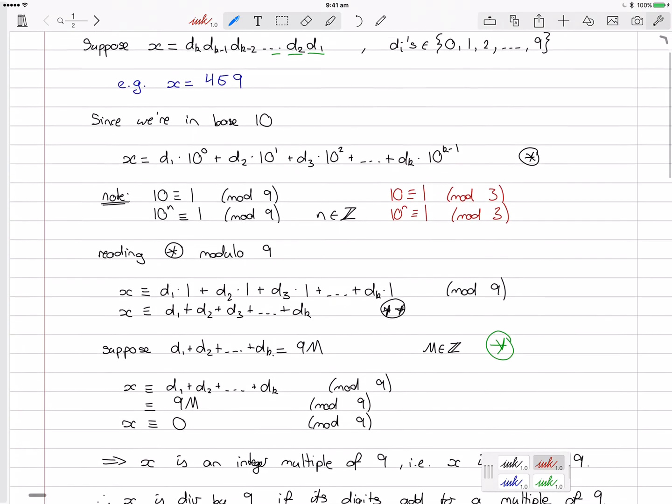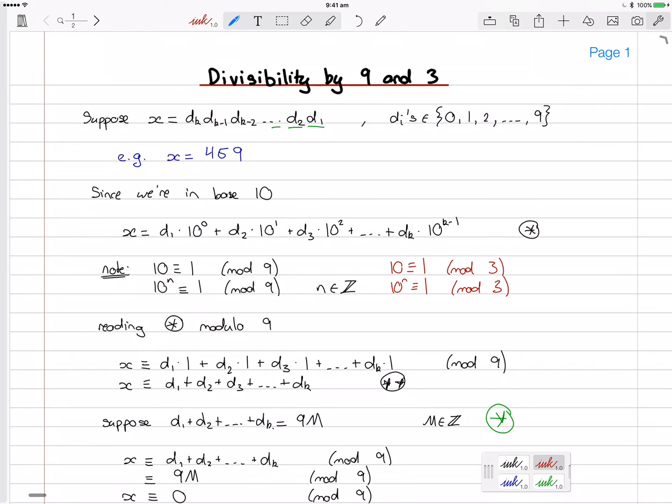All right, so that is how we test if an integer is divisible by 9 or 3. We just add the digits of the integer and see if it's an integer multiple of 9 or 3 respectively.